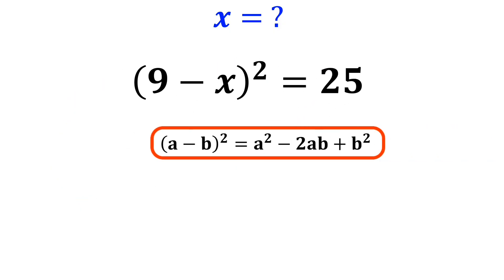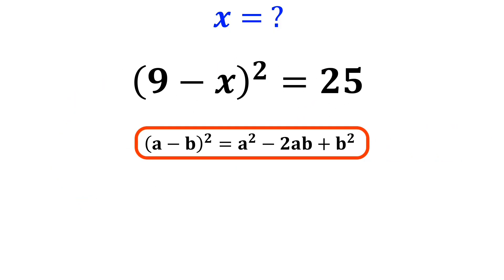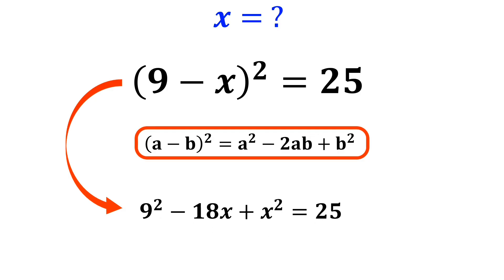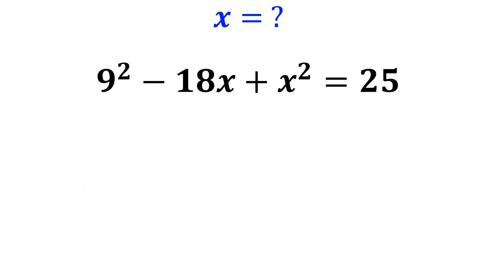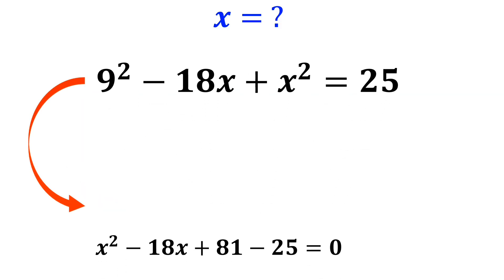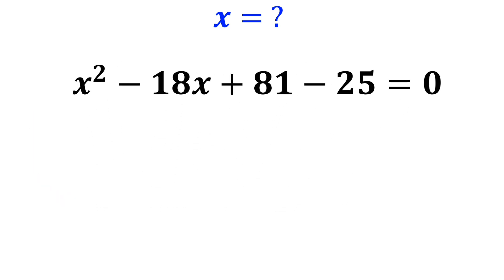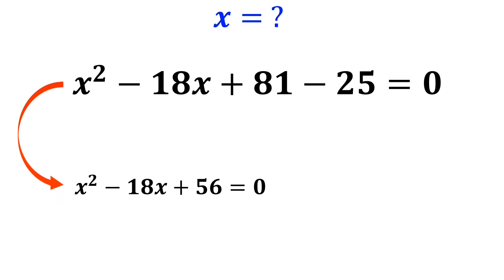According to the binomial identity, a minus b all squared equals a squared minus 2 times a times b plus b squared. So we can rewrite this expression as 9 squared minus 18x plus x squared equals 25, which simplifies to x squared minus 18x plus 81 minus 25 equals 0, and further simplifies to x squared minus 18x plus 56 equals 0.